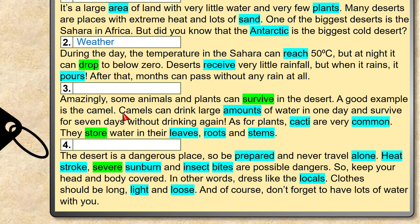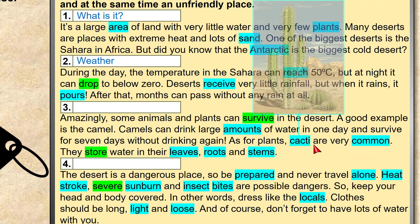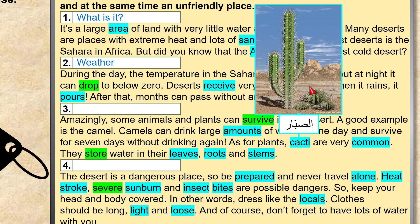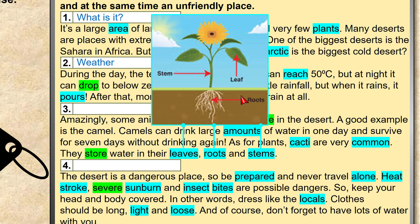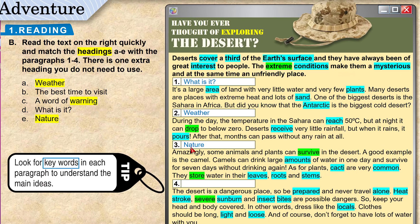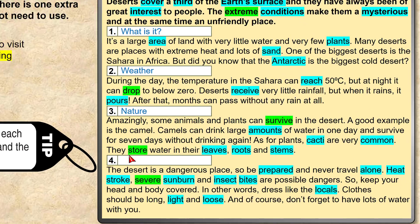Amazingly, some animals and plants can survive in the desert. Camels can drink large amounts of water in one day and survive for seven days without drinking again. As for plants, cacti — plural of cactus — are very common and store water in their leaves, roots, and stems. The best heading for this paragraph is E — 'Nature' — the characteristics of desert life.